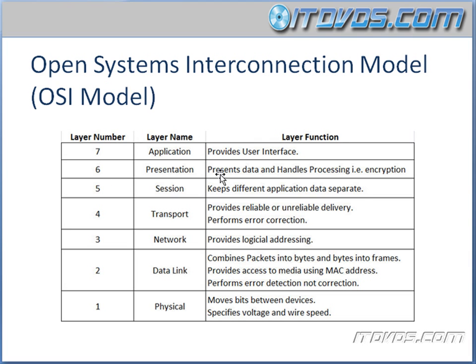Layer six is our presentation layer. This presents the data and handles processing like encryption. Layer five is the session layer, and this keeps different application data separate. So if you're working in two different applications that are talking over the network, the session layer makes sure that the application data is separated.